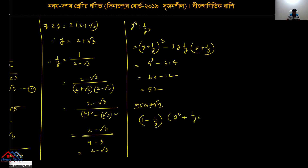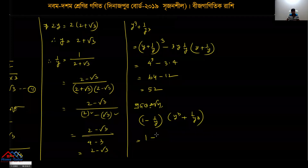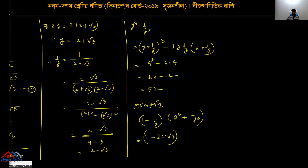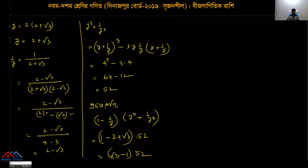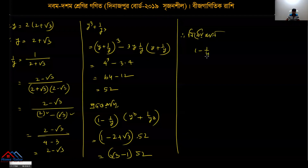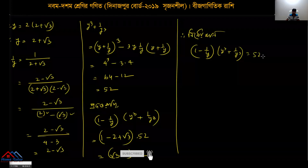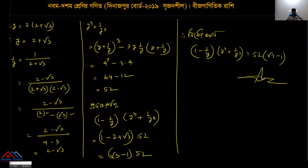y³ + 1/y³: with 1/y = 2 - √3, and having y + 1/y = 4. The calculation gives 52. So y³ + 1/y³ = 52. And checking: √3 - 2 times (1 - 1/y) gives minus 1. So the answer is 52√3 - 1. The final answer is confirmed as 52√3.